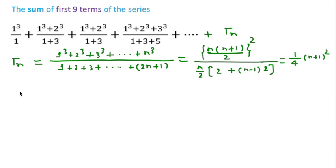So we can write Tn = 1/4 times (n+1)². If we expand this then we can write n² + 2n + 1.